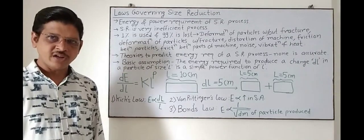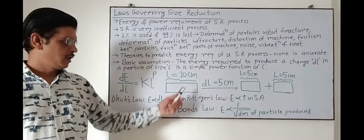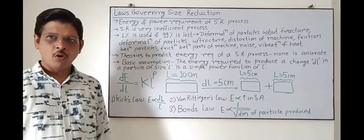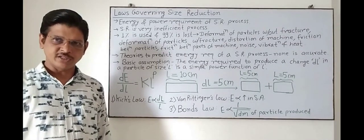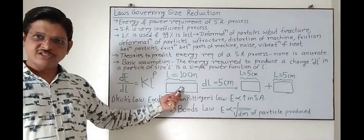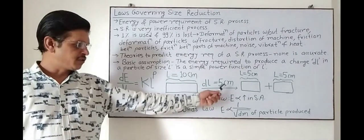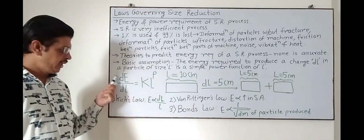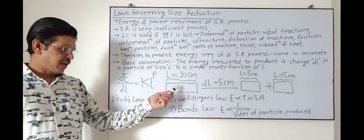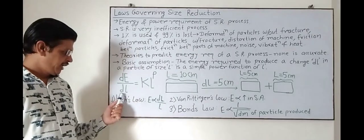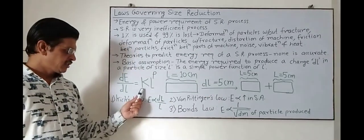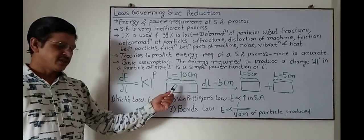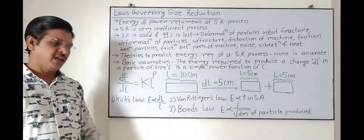Now let's try to understand this basic assumption. Suppose this is a particle with an original size of 10 cm — that means the size before reduction. We will change this size by 5 cm; this 5 cm is dL. As per this equation, dE is the energy required for the size reduction of this particle, dL is 5 cm, k is the proportionality constant which depends on the material, L is the original size, that is 10 cm. L is the factor and P is the exponent.